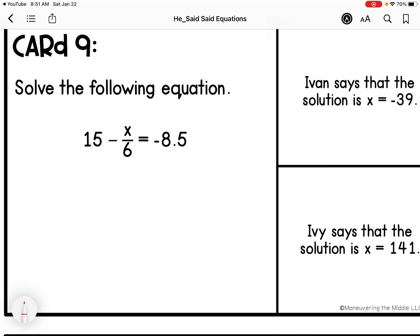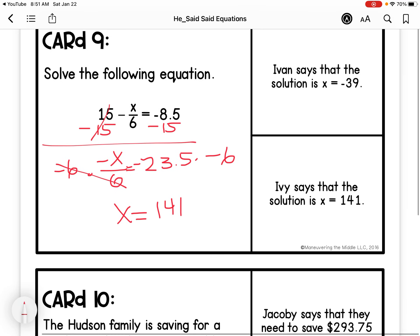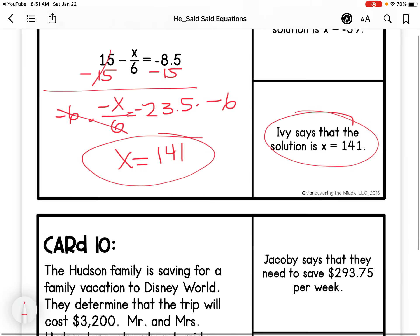All right. Then I'm going to subtract 15 on each side. Signs are the same, so I'm going to add. And I'm going to multiply by negative 6 on each side. So X equals 141. So Ivy's correct.